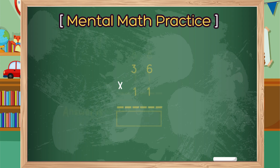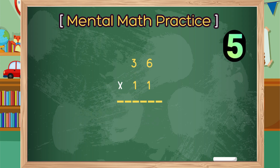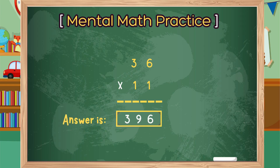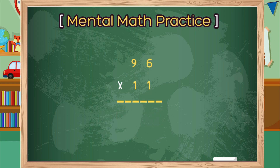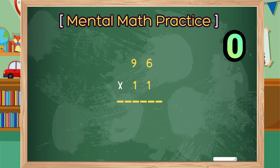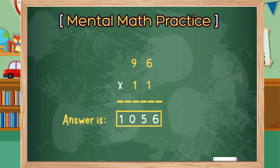Lastly, what is 96 times 11? The correct answer is 1056. Did you get it right?